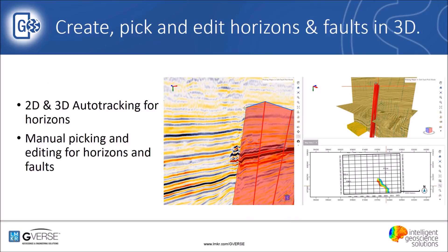In the new 3D environment, you can also pick your horizons and your faults. You can mark your seed picks, edit them, and run the auto-trackers to create surfaces — basically complete horizon and fault interpretation in 3D.